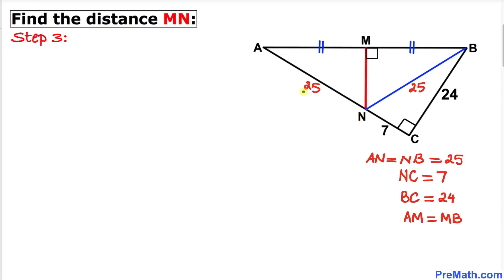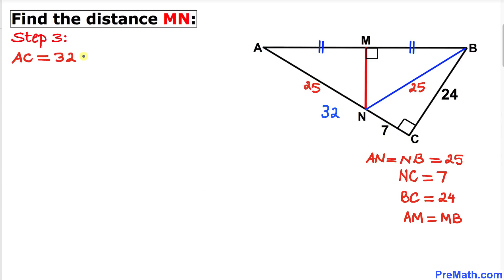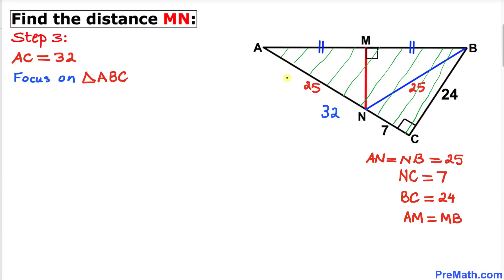Now let's find side length AC. The total distance AC equals the sum of the two individual lengths: 25 plus 7 equals 32. So side length AC is 32 units. Focusing on the big right triangle ABC, we will use the Pythagorean theorem again.